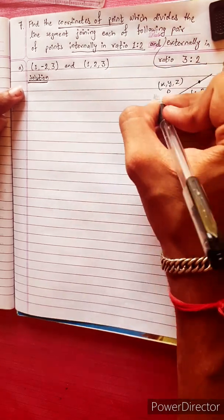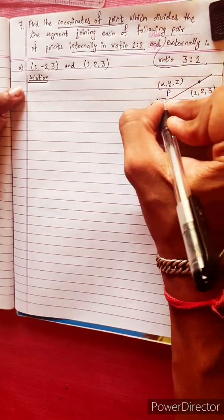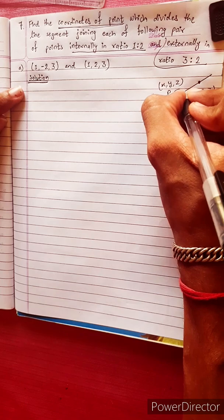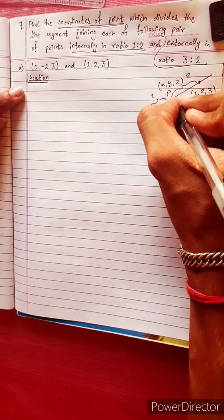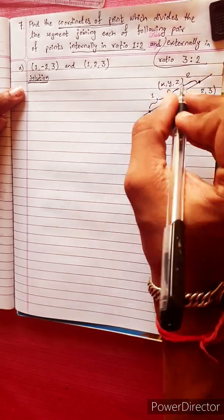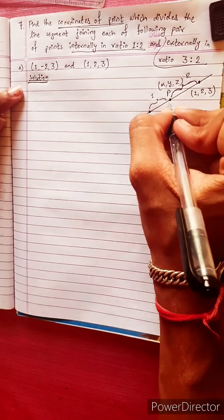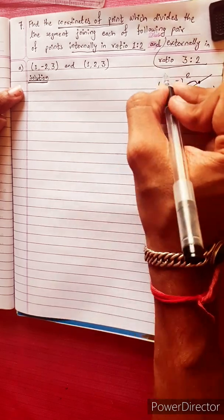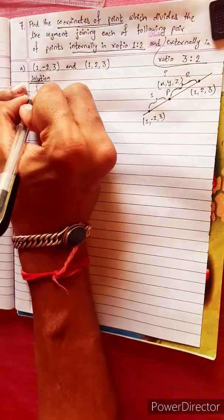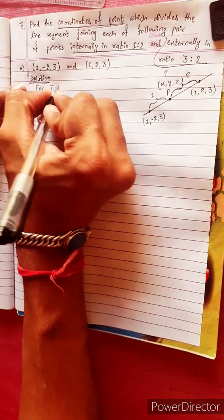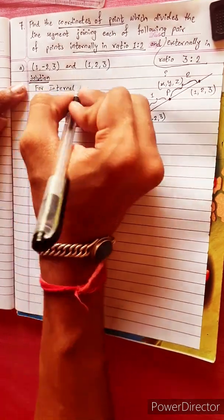Find the coordinates of point P in the ratio 1 is to 2. We need to divide point P with coordinates x, y, z in this ratio. This is for internal division.